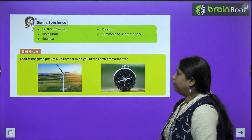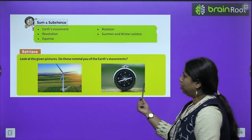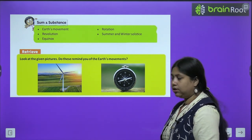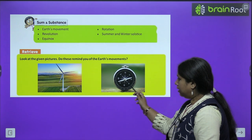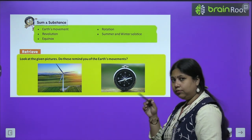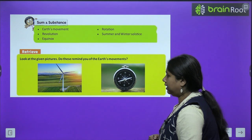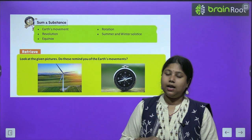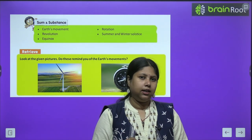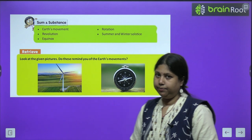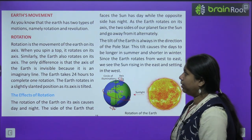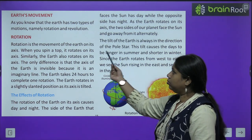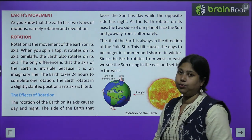First, look at the given pictures — do these remind you of earth's movement? We will study about the earth's movement, which means we can understand about movement. For example, if we look at the compass, the magnetic needle moves. The windmills are also moving. As you know, earth has two types of motions, namely rotation and revolution.